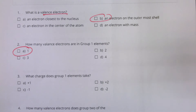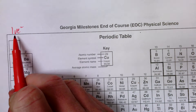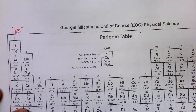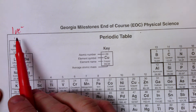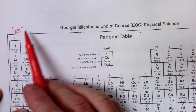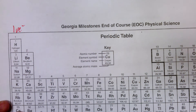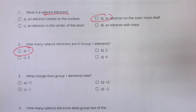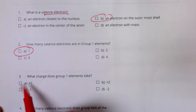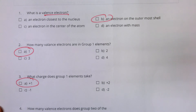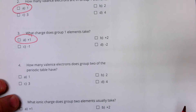So what charge does the group one elements take? If you have one valence electron, remember you're trying to get eight or basically zero so that you're stable. These elements are going to give up an electron because they can't possibly take seven to get eight. So they're going to give up one. When you give up an electron, you're giving up one negative charge, which means you're going to have one more positive than negative. Group one elements end up having a plus one charge.